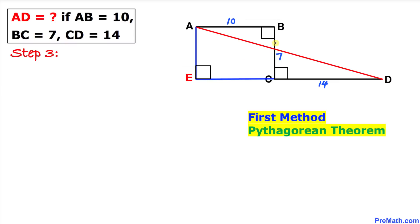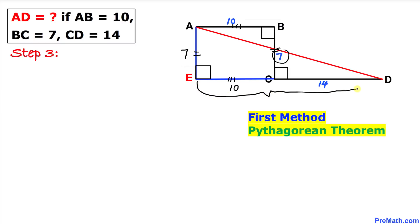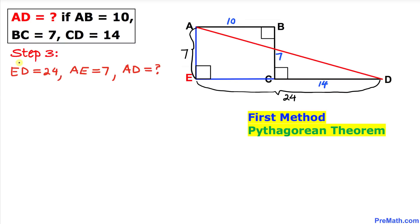We know that BC is 7, and since these two sides are equal in length, AE is going to be 7 as well. Likewise, AB and EC are equal in length, and since AB is 10, side EC is going to be 10 units as well. So this combined ED length is 10 plus 14, giving us 24.